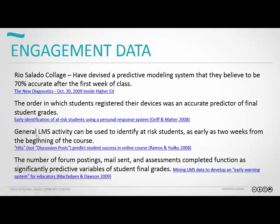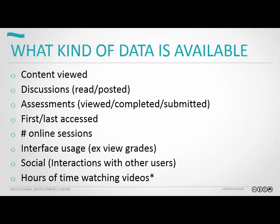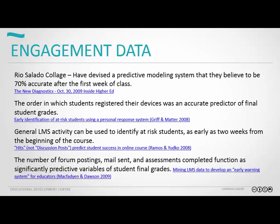There was another study that looked at when students registered their clickers — a pretty direct correlation to student grades as well. Beginning of course: good correlation. Number of forum postings, mail interactions, and assessments completed. There are a bunch of different institutions using storehouses of data to look at algorithms to try and predict student success based on past course interactions and the final grades associated with that course.